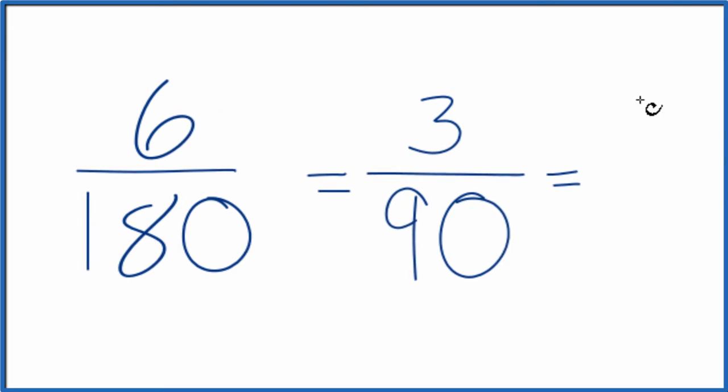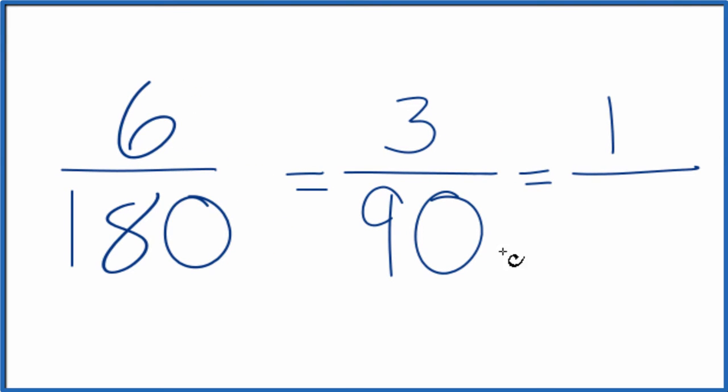So if we divide 3 by 3, that gives us 1. And then 90 divided by 3, that gives us 30. And we can't reduce this any further.